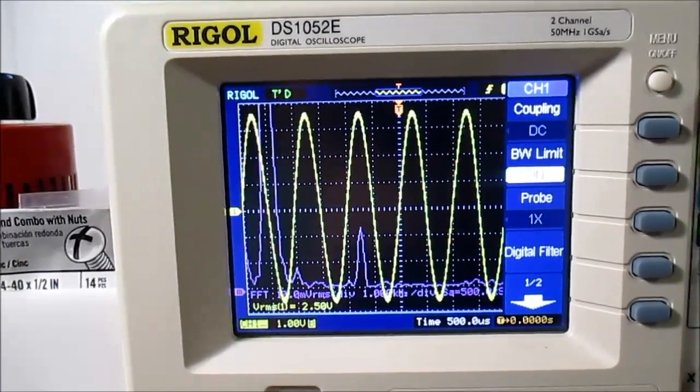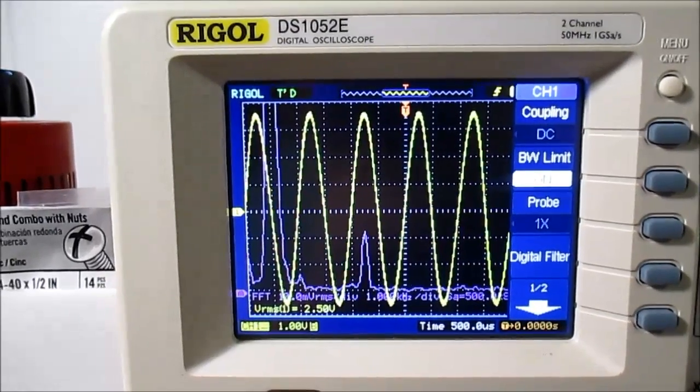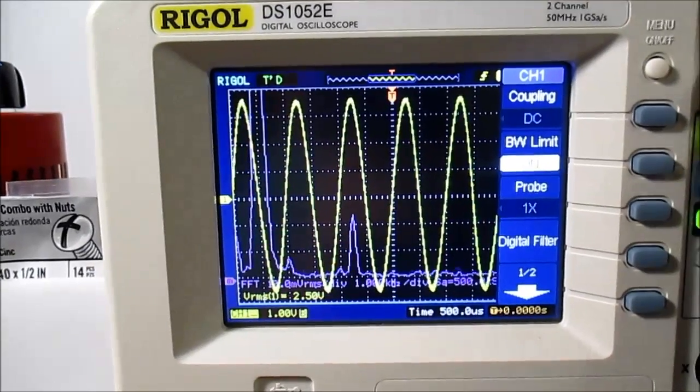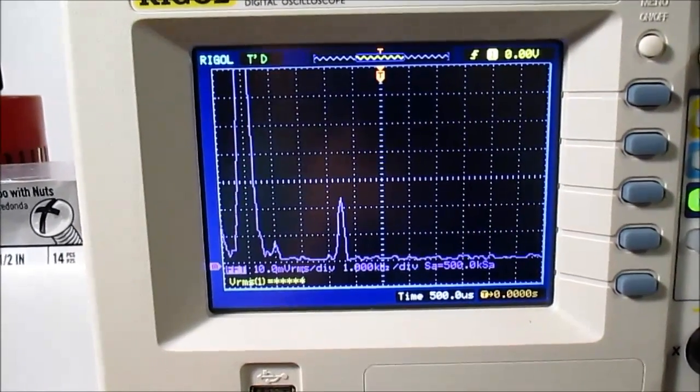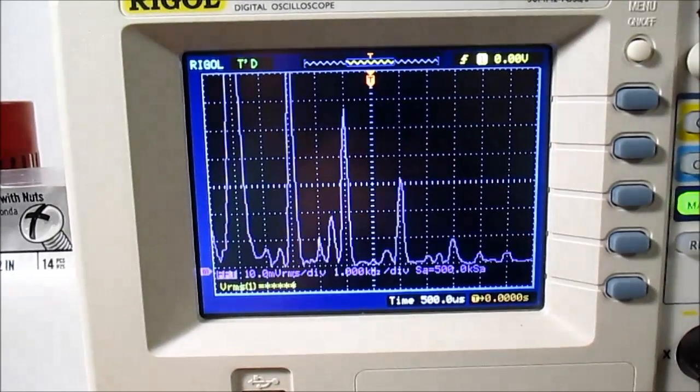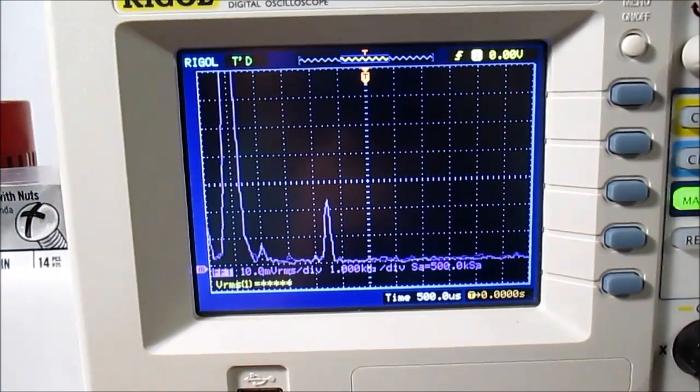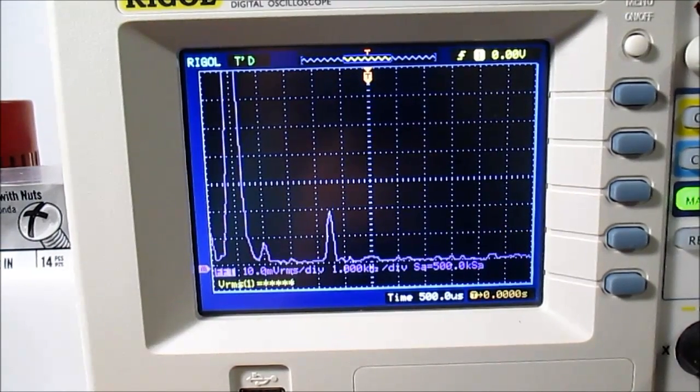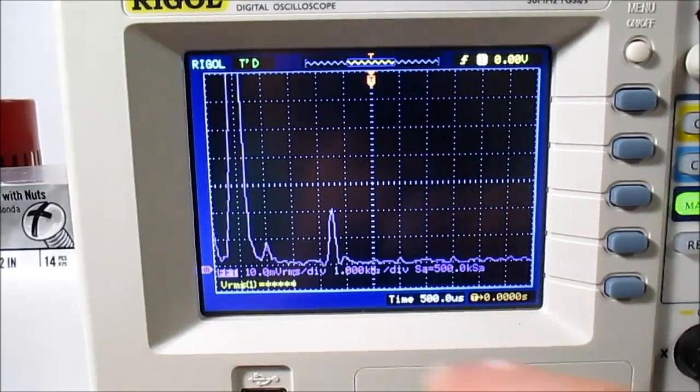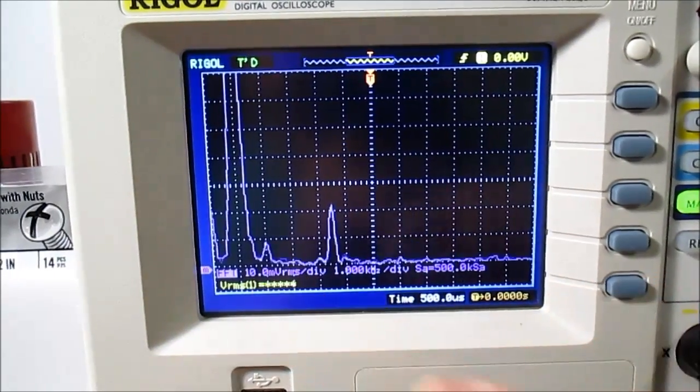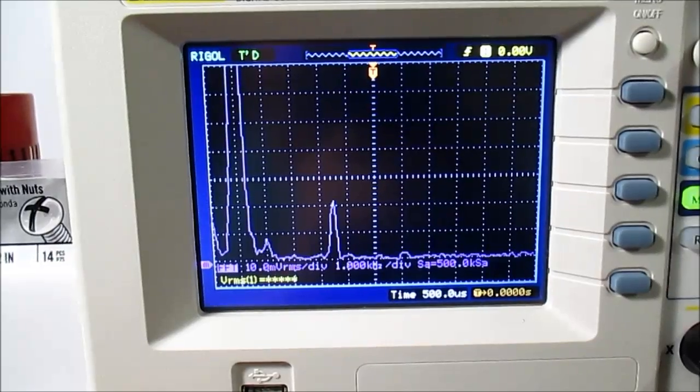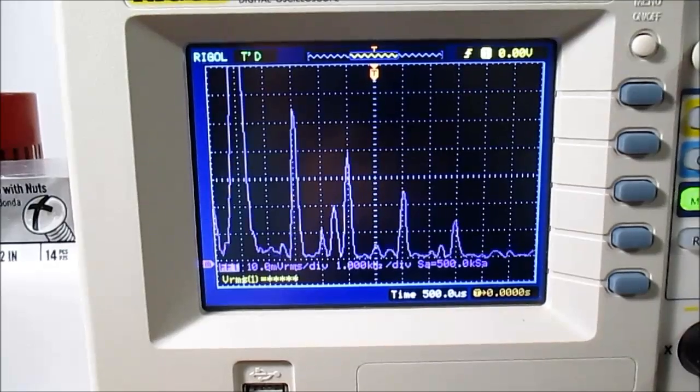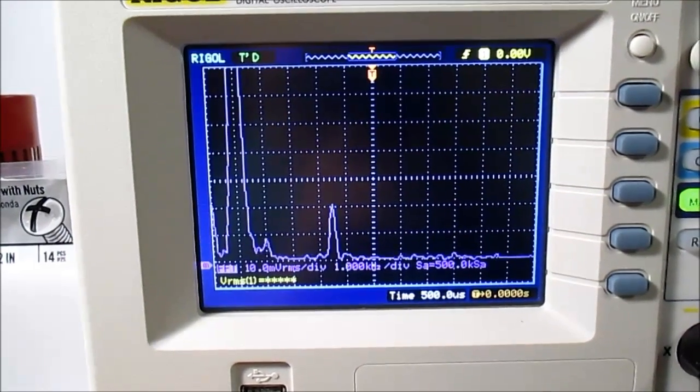Okay, the TDA7231 is putting out 2.5 volts. And it's clipping. It's fairly clean, but it has that second order harmonic notch. Probably 0.2 or 0.3 percent. Yeah, 0.2 percent.